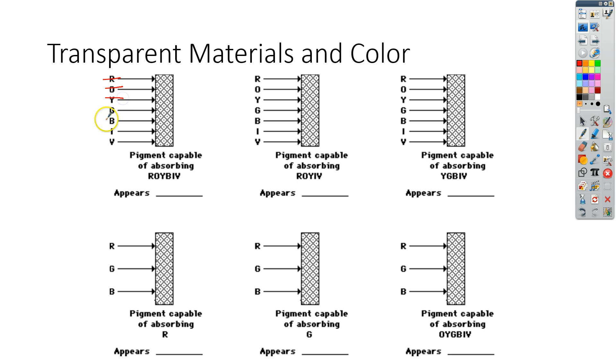So red, orange, yellow, blue, indigo, and violet. And the only light that comes out on this side then would be green. So we get green light. So I'm going to put a G there. It actually gets to come out.